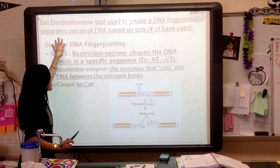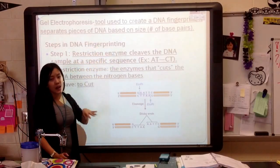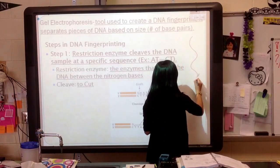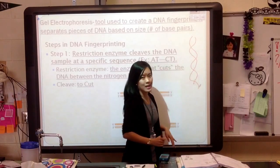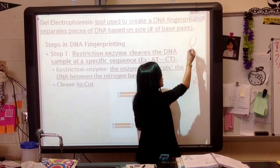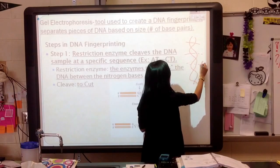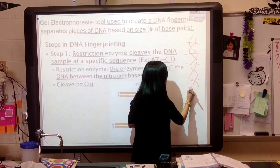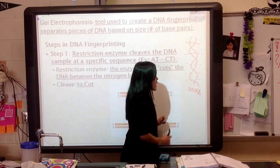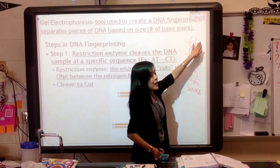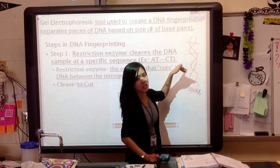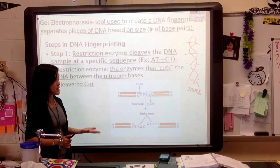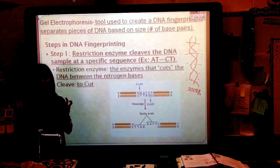It separates pieces of DNA based on size. We have a long strand of DNA, and we actually use some enzymes to cut the DNA. One strand of DNA might have 300 base pairs, and we might cut it into sections of 50, 80, 90, 100 — it just depends on what type of enzyme we use. Scientists can be very specific about where they cut it.